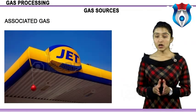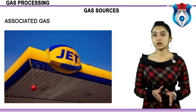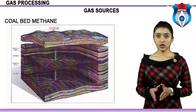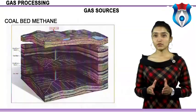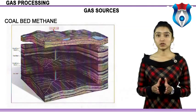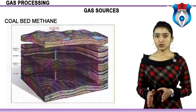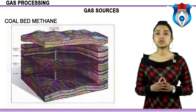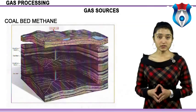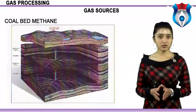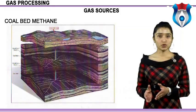Coal bed methane is the generic term for methane gas held in coal and released when water pressure within the buried coal is reduced by pumping from vertical or inclined-to-horizontal surface holes. During coalification, chemical reactions produce substantial quantities of gas; much escapes into surrounding rock, but a large amount is retained within the coal seams. Unlike conventional natural gas reservoirs where gas is trapped in pore spaces of rock such as sandstone, methane in coal is adsorbed onto coal grain surfaces or micro-pores and held in place by reservoir pressure.